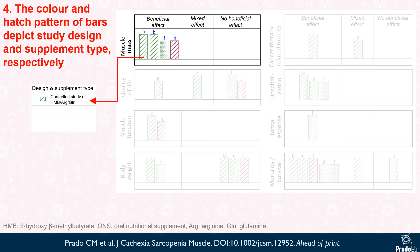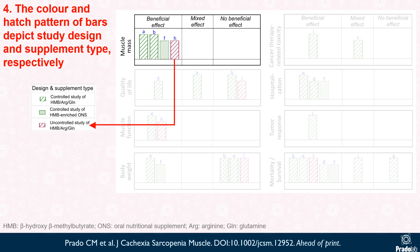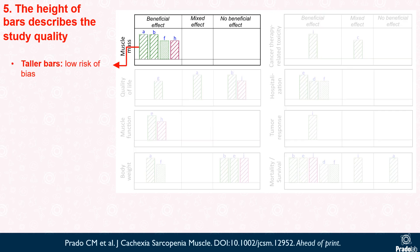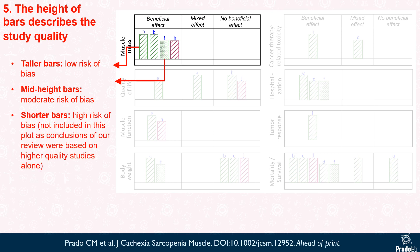In our review, we included controlled studies of HMB in combination with arginine and glutamine supplements, controlled studies of oral nutritional supplements enriched with HMB, and uncontrolled studies of HMB in combination with arginine and glutamine supplements. The height of the bar describes the study quality, with taller bars indicating low risk of bias, mid-height bars representing moderate risk of bias, and shorter bars illustrating high risk of bias.